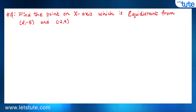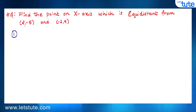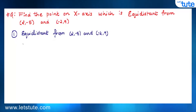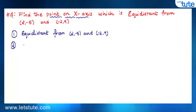The question says: find the point on the x-axis which is equidistant from (2, -5) and (-2, 9). So basically we need to find a third point which is equidistant from these two points. The required point is on the x-axis.